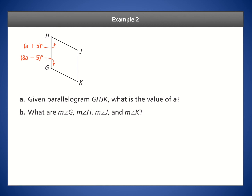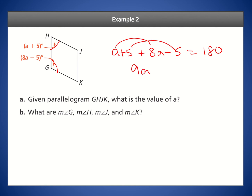Let's look at an example with these angle properties. We have two consecutive interior angles that are side-by-side. Since they are consecutive interior angles, they have to add up to 180. Writing that equation and combining like terms, we get 9A — note that the 5 and negative 5 cancel — so 9A equals 180. Dividing by 9, A equals 20.